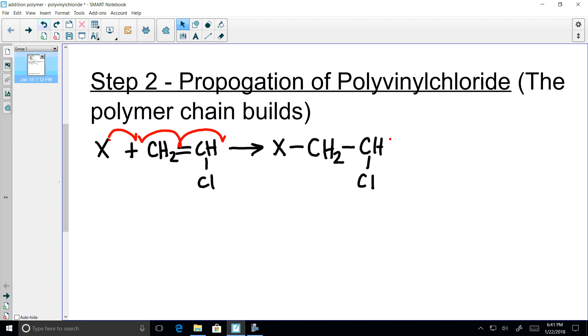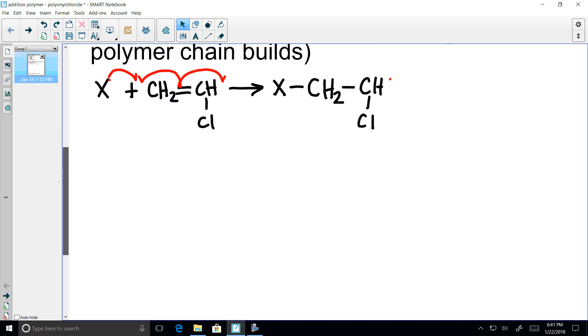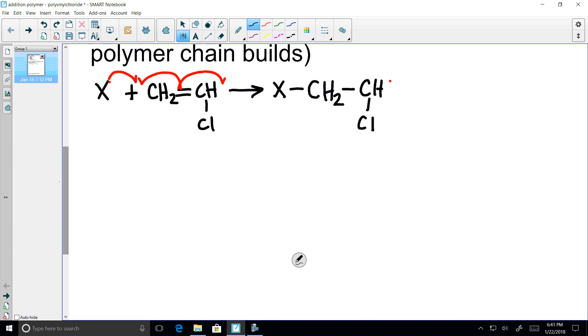The product of step one becomes a reactant into the second propagational step. So X bonded to CH2, CH, CL will attack another piece of vinyl chloride monomer.